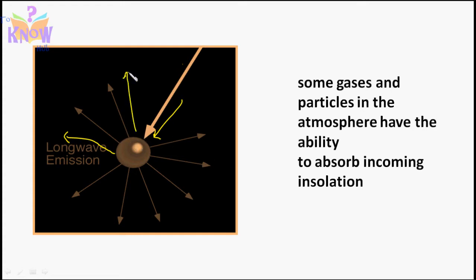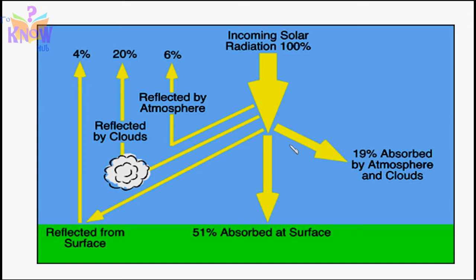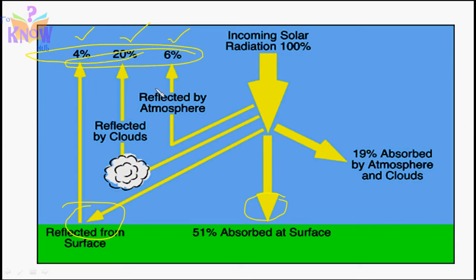The third thing that happens is reflection. As the name implies, molecules in the atmosphere reflect solar energy, and clouds also reflect solar energy. Only 51% of solar radiation actually reaches the earth's surface. Around 20% gets reflected by clouds, 6% gets reflected by the atmosphere, and around 4% is reflected from the surface — for example, when solar radiation falls on snow or glaciers, it reflects back.